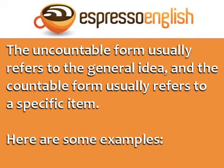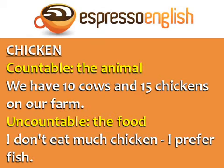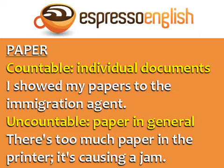For these words, the uncountable form usually refers to the general idea, and the countable form usually refers to a specific item or specific instance. For example, 'chicken' is countable when talking about the animal: 'We have ten cows and fifteen chickens on our farm.' Chicken is uncountable when talking about the food: 'I don't eat much chicken, I prefer fish.'